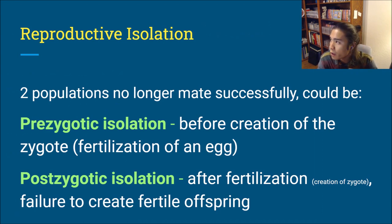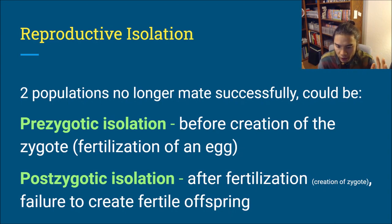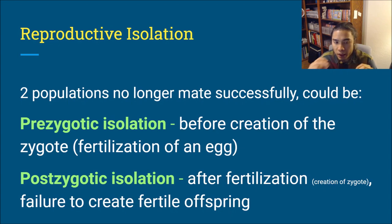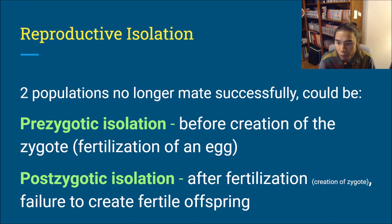Reproductive isolation — where they don't reproduce with one another — has two categories, and the namesake for both comes from the zygote. The zygote is the fertilized ovum; generally two organisms produce sperm that fertilizes the egg. Pre-zygotic isolation means this isolation happens before the zygote is formed, before fertilization of an egg. Post-zygotic isolation is after fertilization — the sperm did meet the egg, however there was a failure to create fertile offspring.